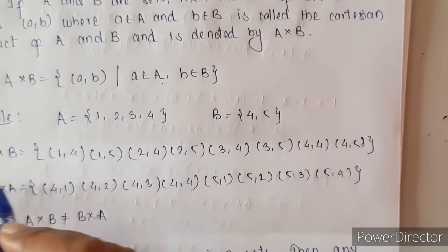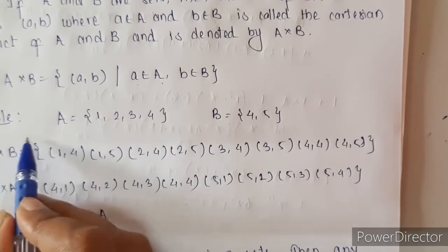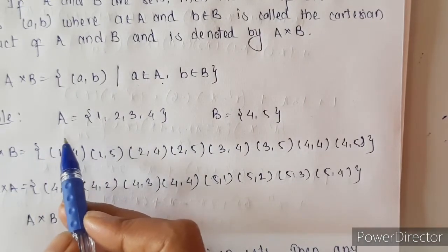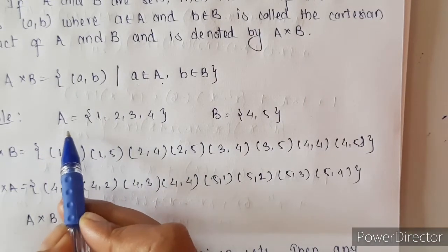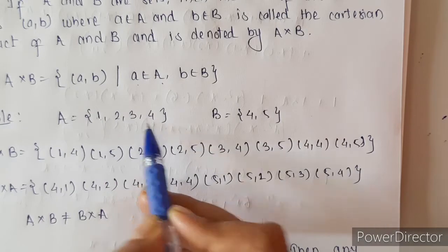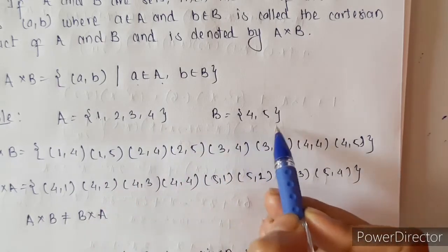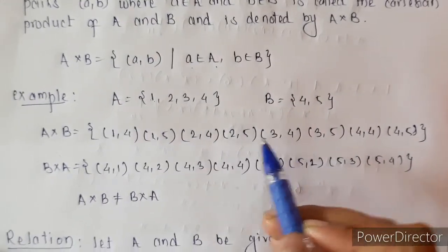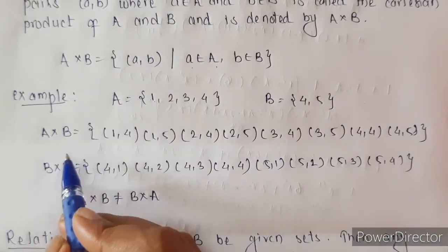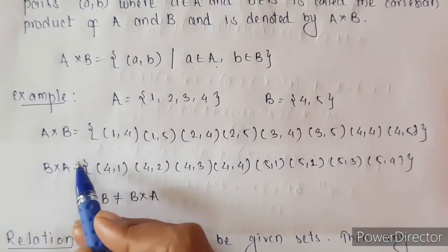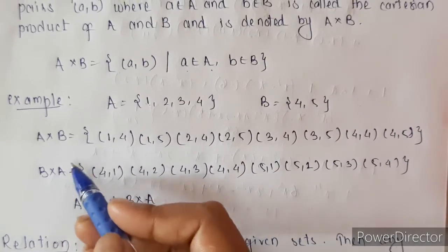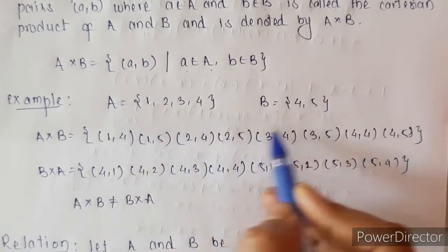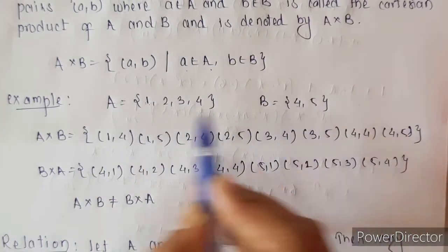Let us take one example of Cartesian product. We have set A = {1, 2, 3, 4} and set B = {4, 5}. Let us write A cross B. So this is our A cross B — first element from set A, second from set B.